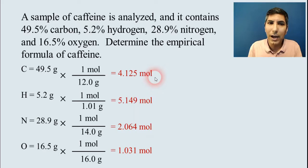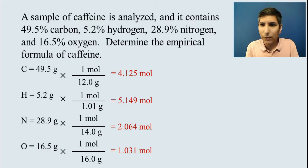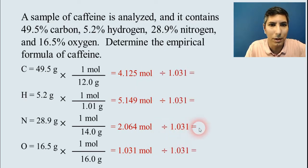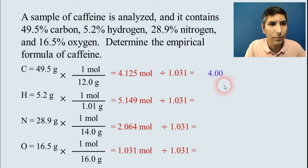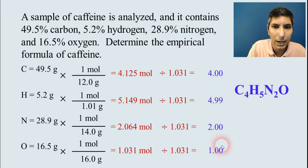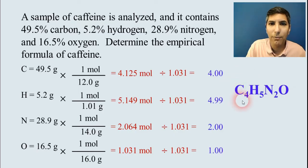Now, once we have moles, we're going to divide each of those by the smallest of those mole values. So as I look at those four mole values down here, I see that the smallest one is 1.031. So I'm going to divide all of those by the 1.031. Now, when I do that, I get a number of 4 or very close to 4 for carbon. I get very close to 5 for hydrogen. I get very close to 2 for nitrogen. And I will, of course, get 1 for oxygen. These, the 4, the 5, the 2, and the 1 represent the subscripts. So we have C4, H5, N2O. So that's the empirical formula of caffeine.